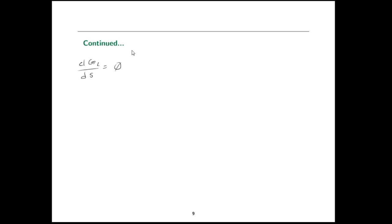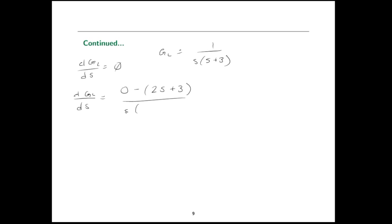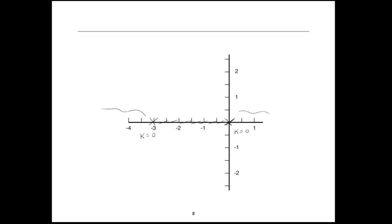Let's calculate the breakaway point. Setting dG_L/ds equals 0, where G_L is 1 over s(s plus 3). Using the quotient rule, the derivative is negative (2s plus 3) divided by the denominator squared. Setting the numerator equal to zero gives 2s equals negative 3, so s equals negative 3/2. That's the breakaway point at negative 1.5 on the real axis.